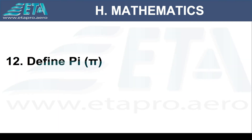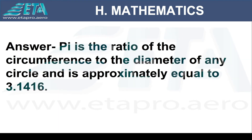Define pi. Pi is the ratio of the circumference to the diameter of any circle and is approximately equal to 3.1416.